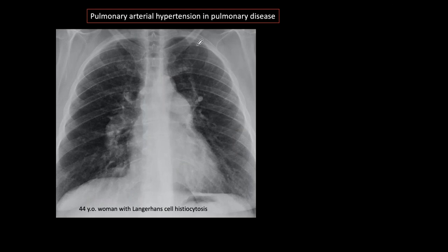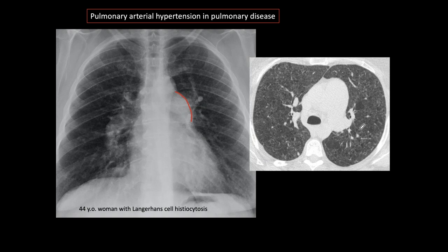Here we have a nice example of pulmonary artery hypertension in pulmonary disease — a 44-year-old woman with Langerhans cell histiocytosis. There are some diffuse, ill-defined abnormalities with no clear pattern. But what is clear is an obvious convexity of the pulmonary artery segment, large hila, and very limited vascularity in the periphery — typical signs of pulmonary arterial hypertension. CT demonstrates the diffuse affectation of the lungs and the marked increase in size of the pulmonary artery compared to the aorta, a sign of pulmonary arterial hypertension.